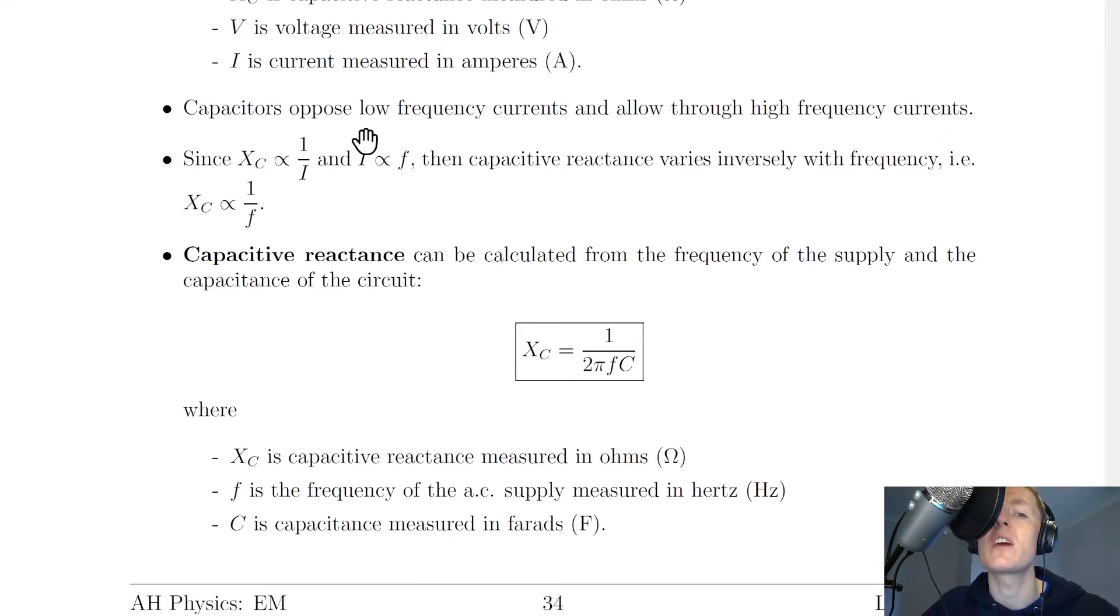So this means that for high frequency currents, we have a bigger number on the denominator, which means our capacitive reactance is smaller, which means that a larger current will flow.